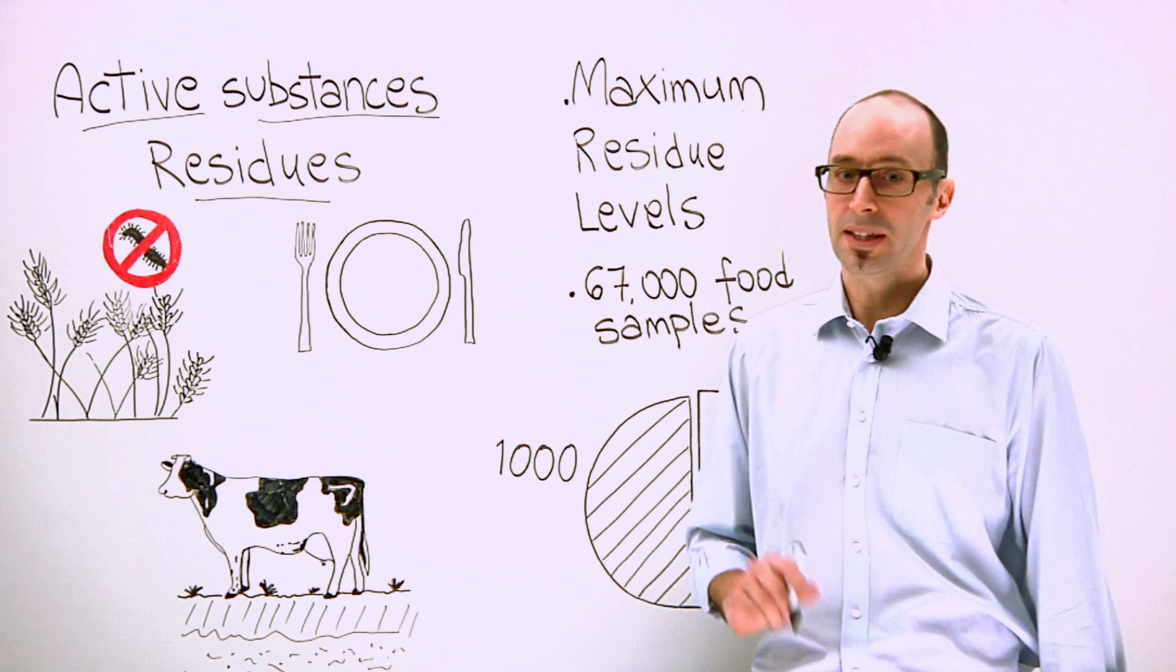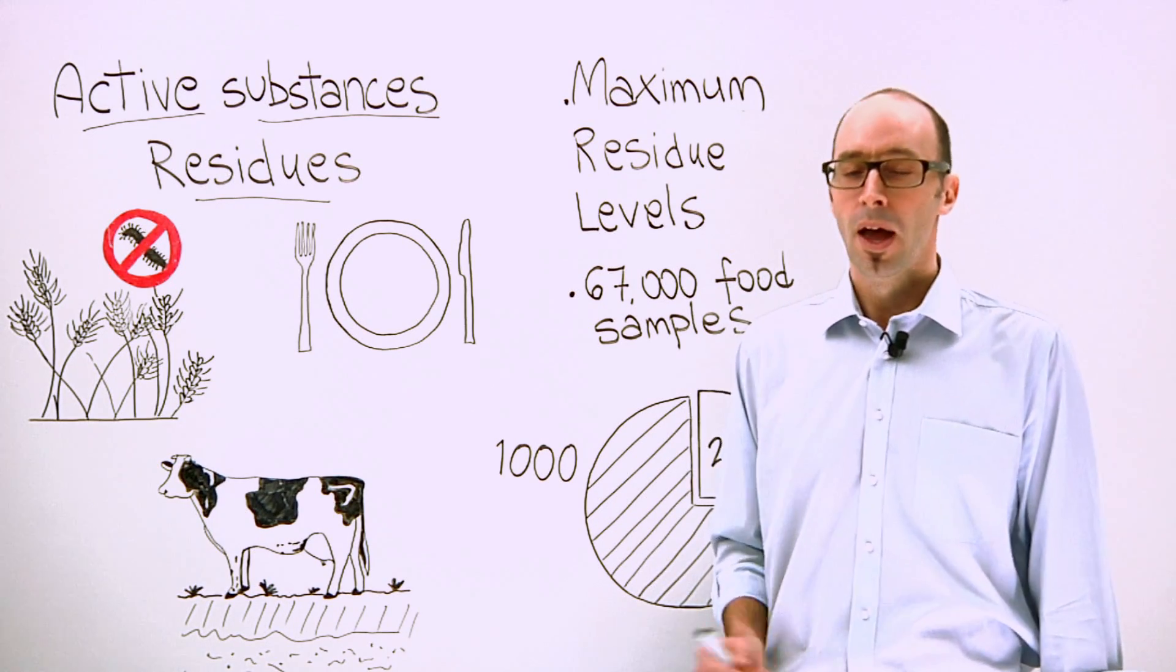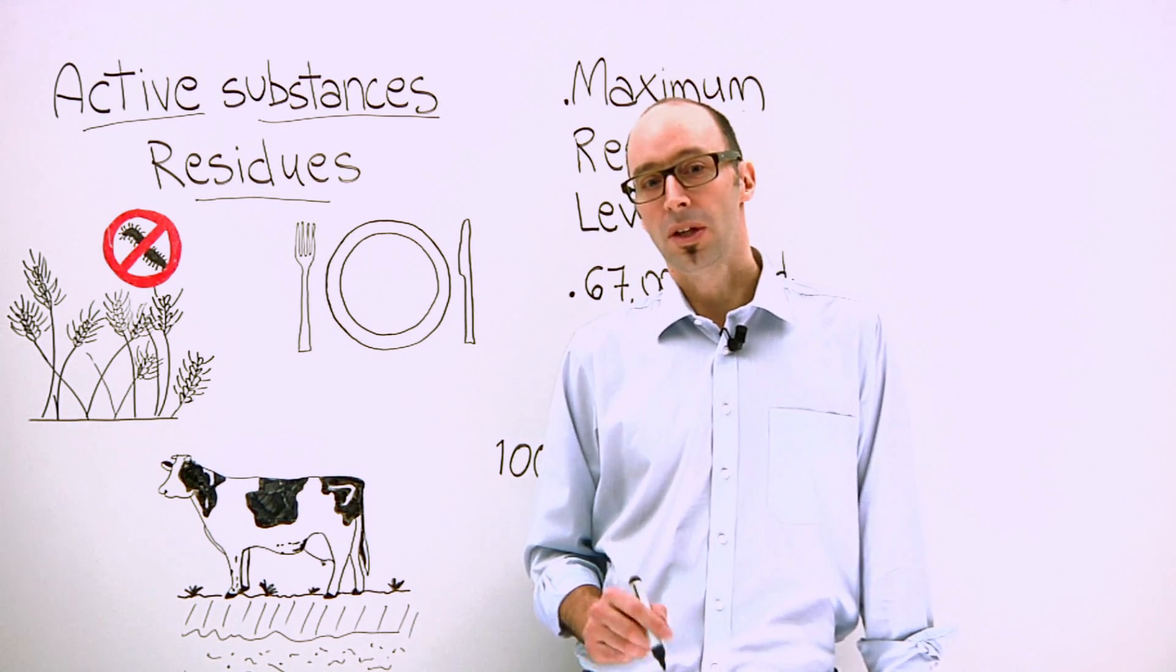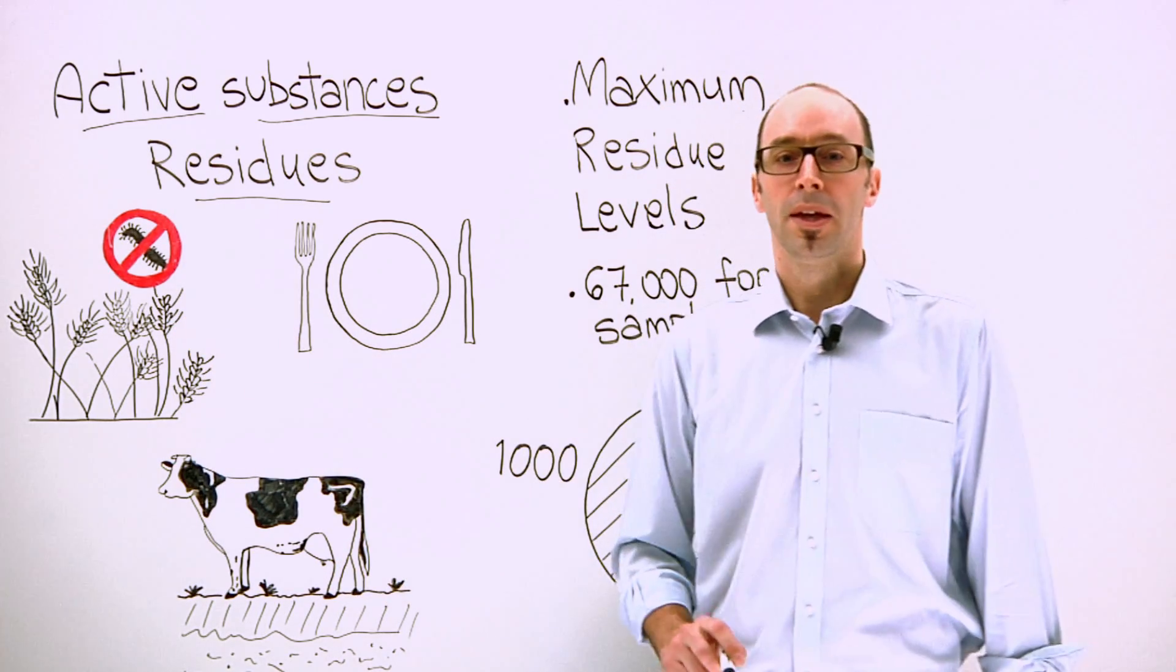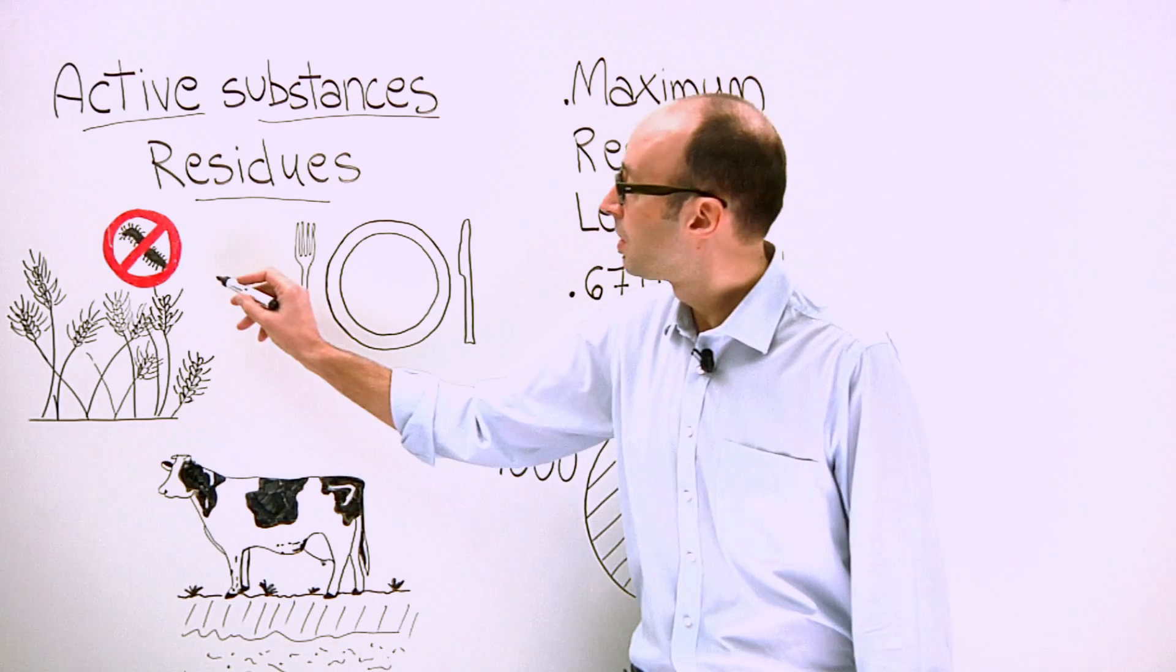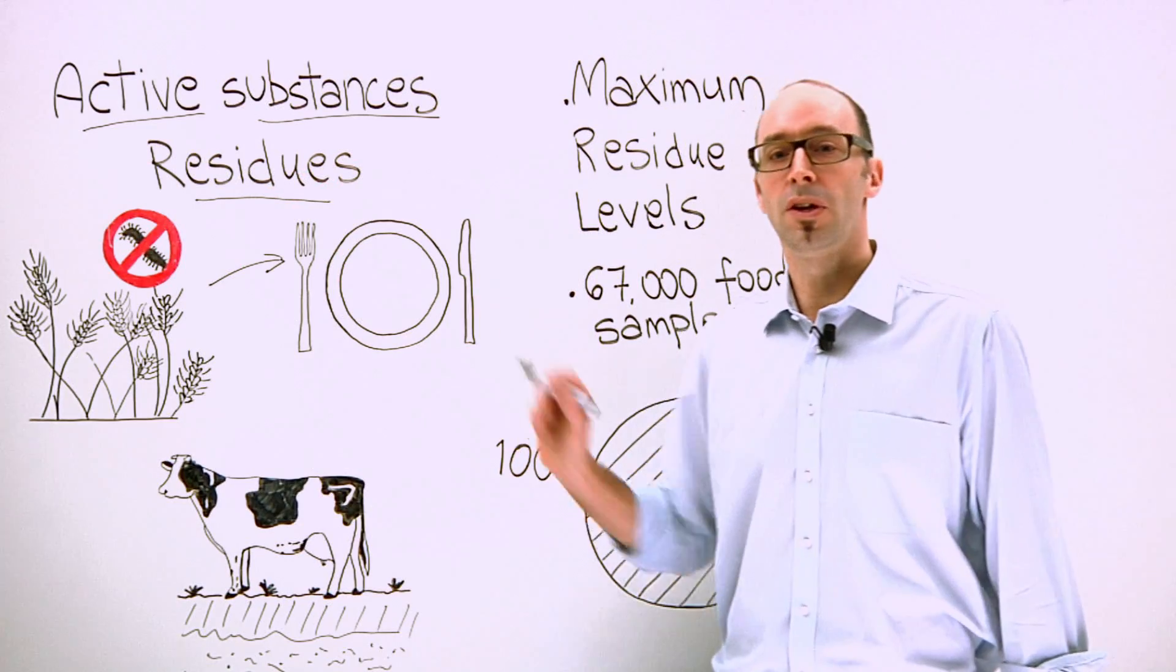These residues could be harmful if they exceed certain levels. There are many ways in which pesticide residues can get into our food. For example, residues in treated crops can be carried from the field to the food on our table.